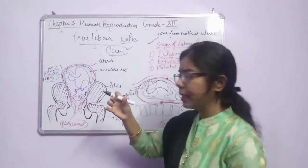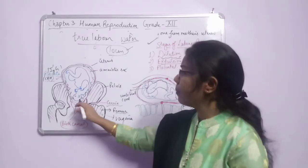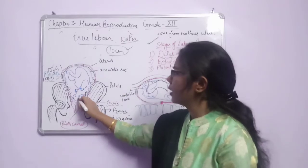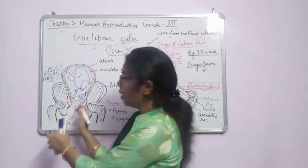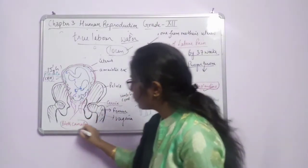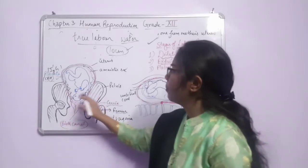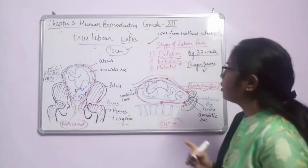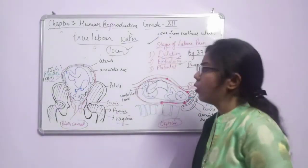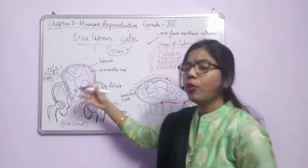When the cervical widening reaches 10 centimetres, it becomes easier to expel the baby. The baby's head comes out first, and the flexible head moves to one side of the cervix, making it easier to expel the whole body. The baby moves through the birth canal toward the cervix and vagina and comes out from the mother's body. Throughout both the dilation and expulsion stages, rhythmic contractions of the uterus provide force for expulsion.